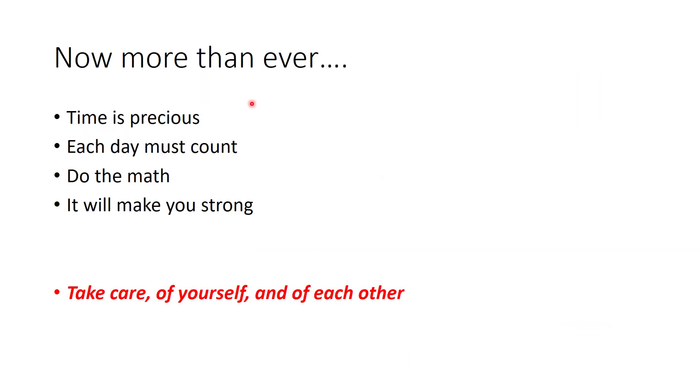Use a graphing calculator to graph the solution set. I recommend you do this problem by hand as well. Graphing both and using test point (0,0), since neither passes through it, we find (0,0) satisfies the parabola equation but not the other, so this area is shaded. These are the intersection points you can find by hand or calculator. Here's a problem to check your understanding. Now more than ever, time is precious. Each day must count. Do the math - it will make you strong. And now more than ever, take care of yourself and of each other.